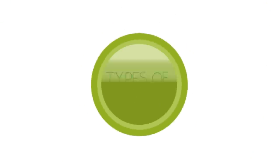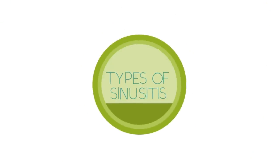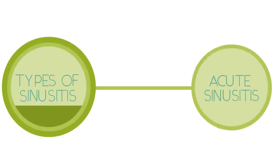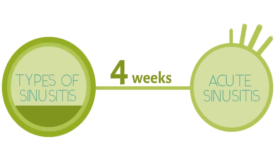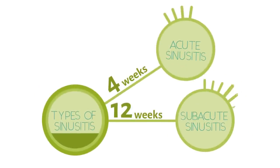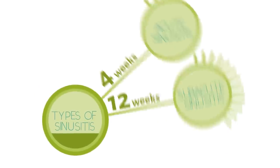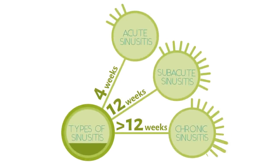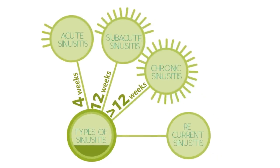Types of sinusitis include: acute sinusitis, which lasts up to 4 weeks; subacute sinusitis, which lasts 4 to 12 weeks; chronic sinusitis, which lasts more than 12 weeks and can continue for months or even years; and recurrent sinusitis, with several attacks within a year.